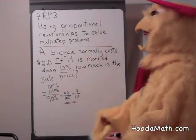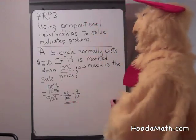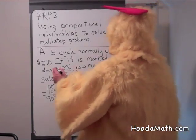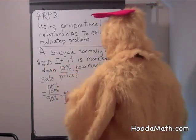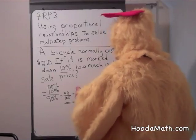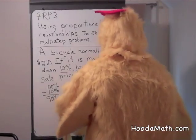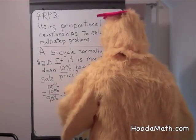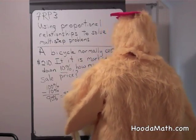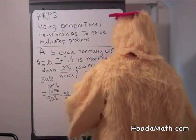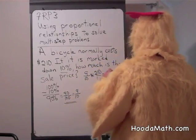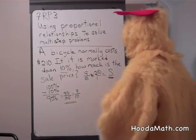So how are we going to solve the problem? Well, we know the normal price is $210, and we're going to pay 90% — or 9 tenths — of it. So 9 tenths times 210 is going to give us our sale price.